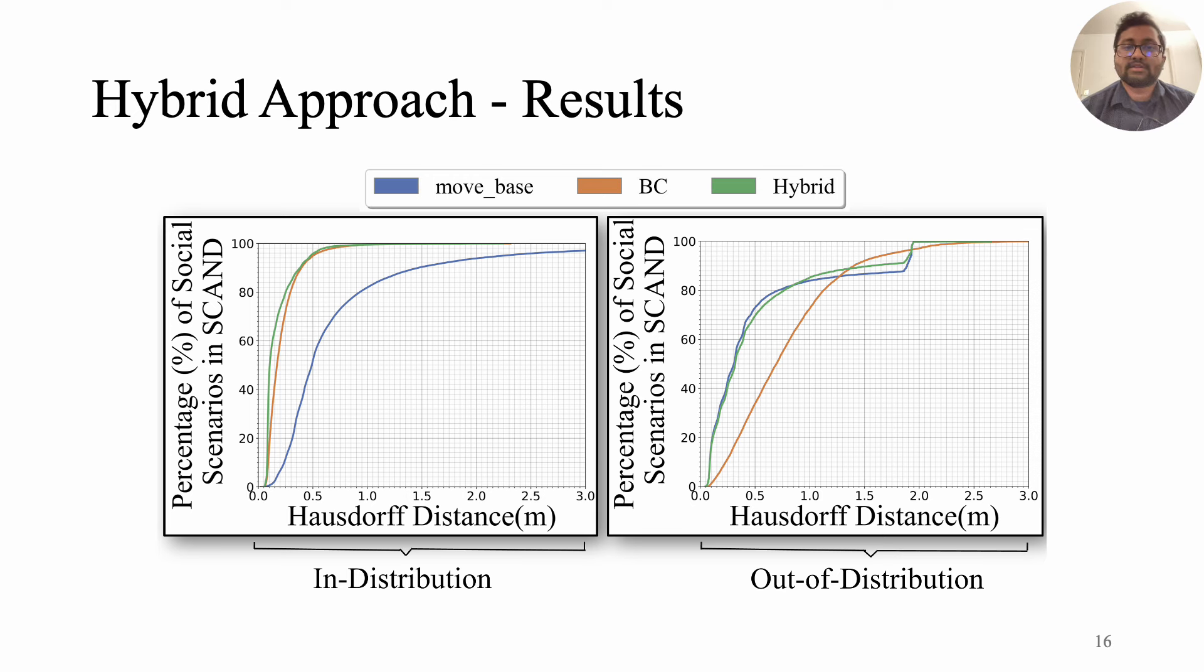In the case of in-distribution data where the test data was from SCAND, both the BC and hybrid models perform best by achieving 90% alignment with the human demonstrations.